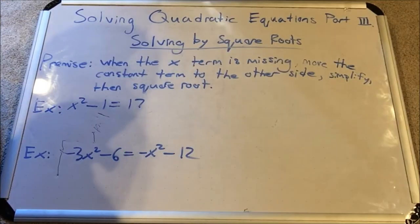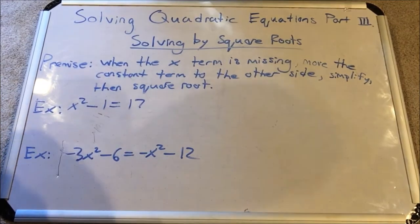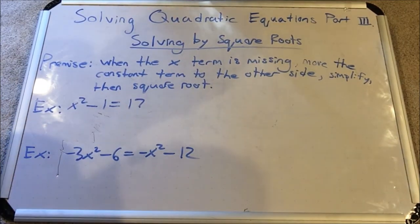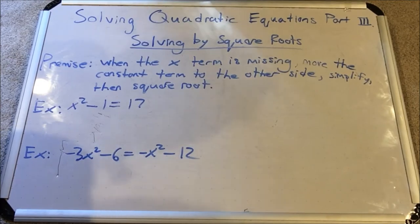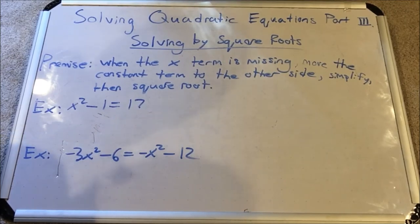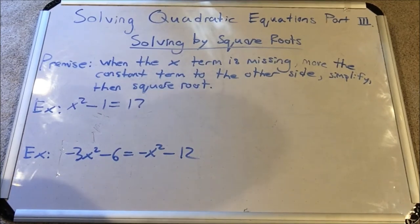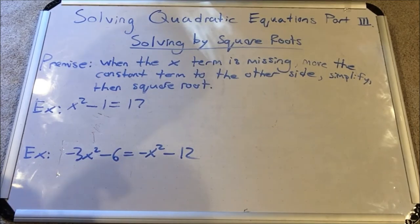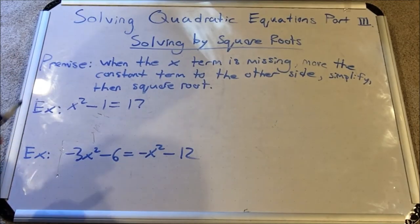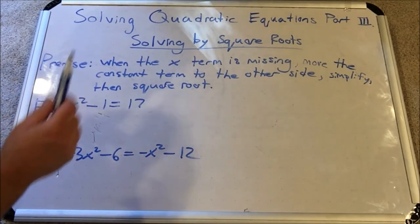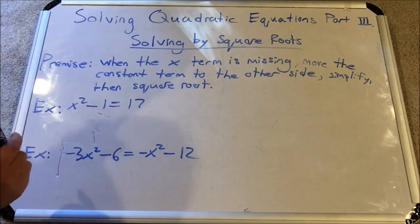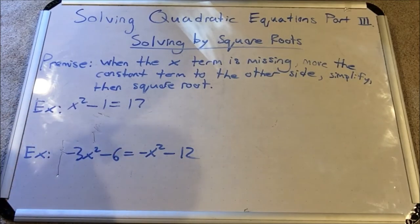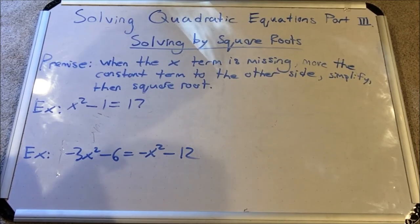First method is solving by square roots. You can use the square root method in all different types of situations, including instead of the difference of squares method from part one. However, square roots is necessary when you cannot solve a difference of squares type binomial with the difference of squares factorization. The premise is that you use this method when the x to the first power term is missing — you move the constant terms to the other side, make sure all the x squared terms are on the same side, simplify if necessary, then square root. You will get two answers.